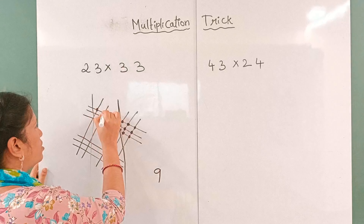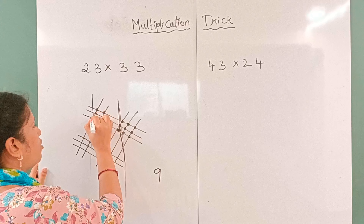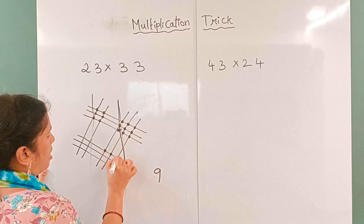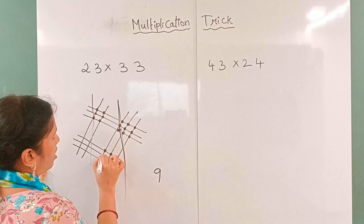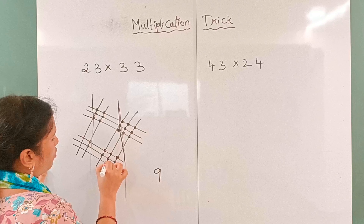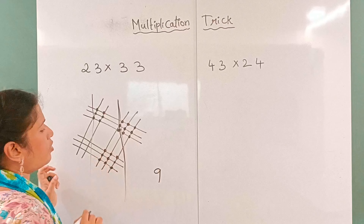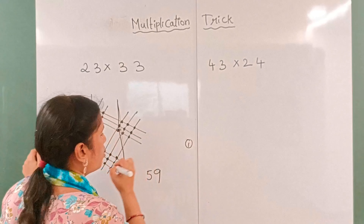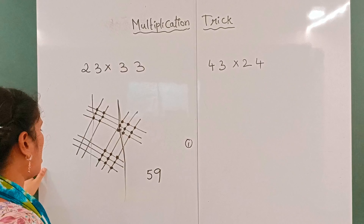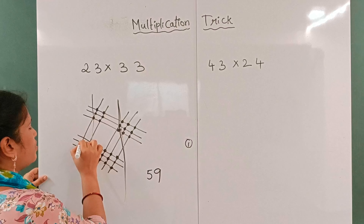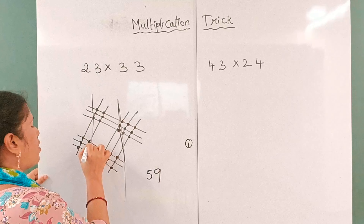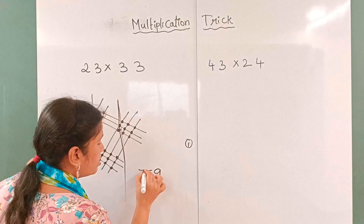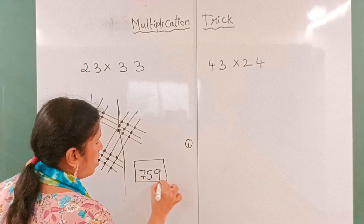Counting intersections: 1, 2, 3, 4, 5, 6, 7, 8, 9, 10, 11, 12, 13, 14, 15. Total fifteen — write 5, carry 1. Next: 1, 2, 3, 4, 5, 6 — six plus one carried equals seven. This is the answer.